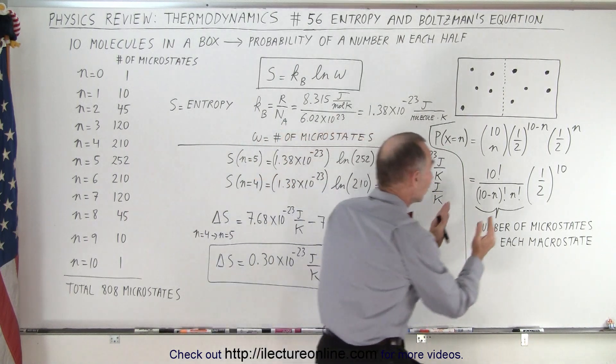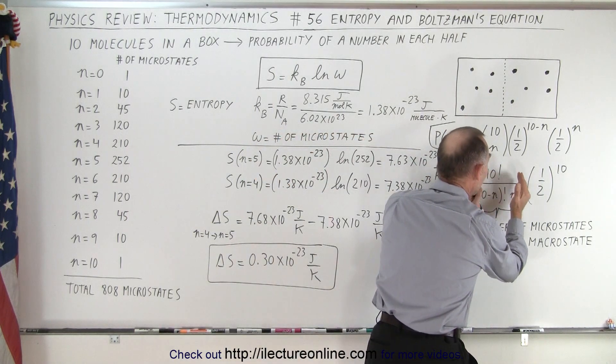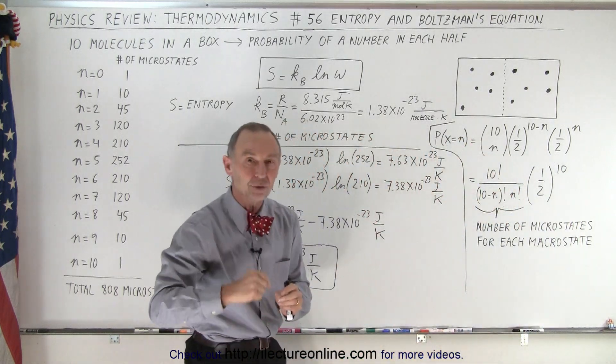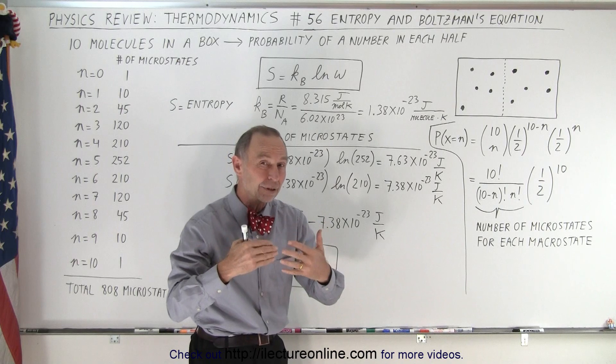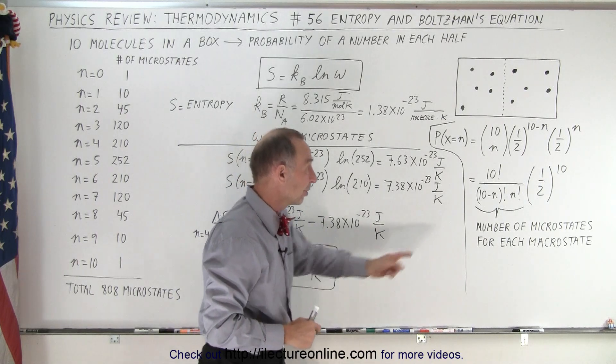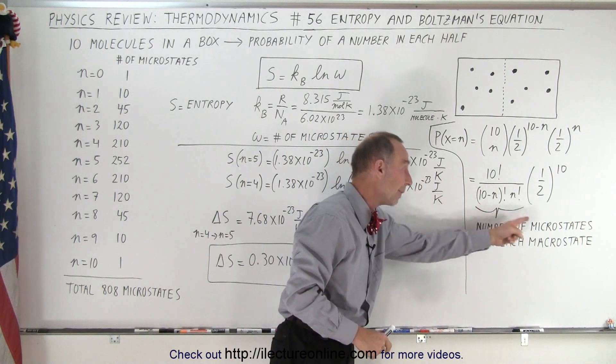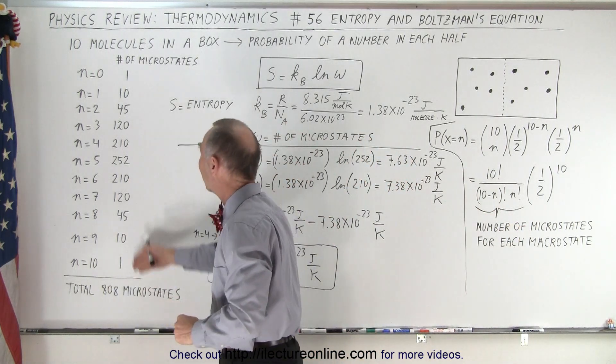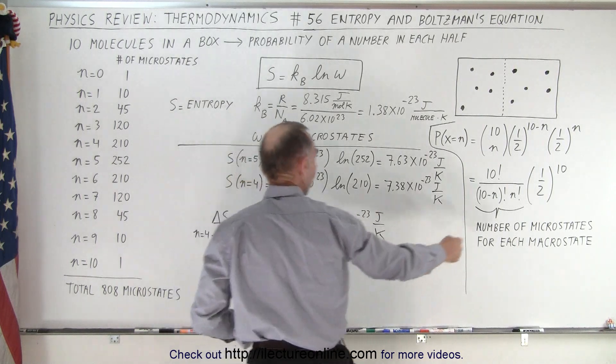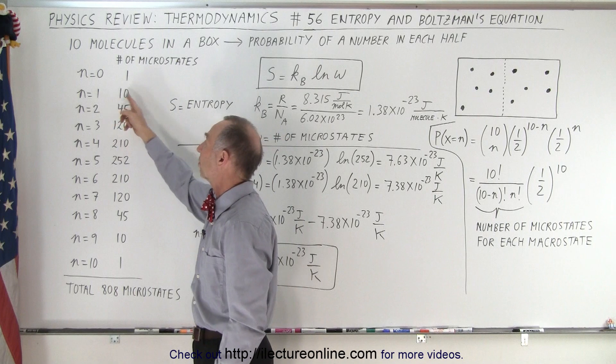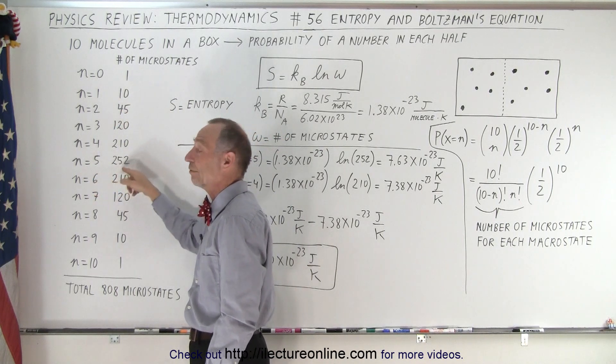And we showed how to do that last time, and we had the general equation right here. Then we have to realize that this portion of the equation represents the number of microstates in each macrostate. Remember, there were 11 macrostates, but I didn't tell you how many microstates there were. So this here represents the number of microstates in each macrostate. And here we have a list of what that number then becomes. So the quantity right here for n equals 0 is 1, for n equals 1 is 10, and for n equals 5 is 252.